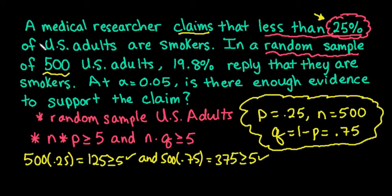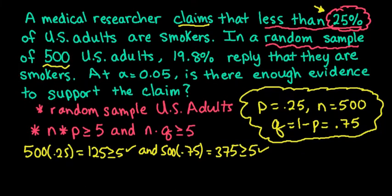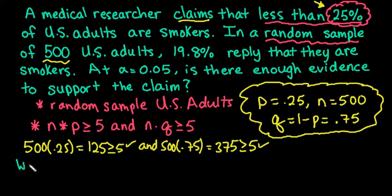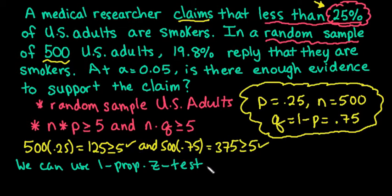All right, so once we have established that both conditions are met, we can say that we are using, or we can use, the 1 proportion z-test. And basically the reason for this part right here is we're using the normal model to approximate a binomial distribution. This is binomial because we have success and failures, which is a discrete distribution. And the normal distribution is a continuous distribution. So in order to be able to use it to approximate, you have to have this part met right here.